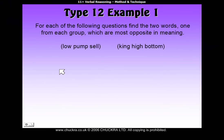This type is quite easy to understand what to do. You'll be given two groups of words. In this example, our first group has low, pump, and sell, and the second group has king, high, and bottom.